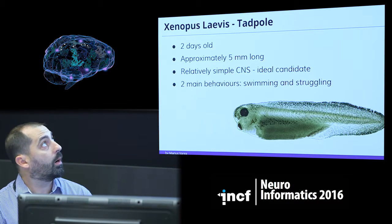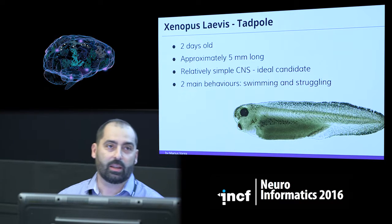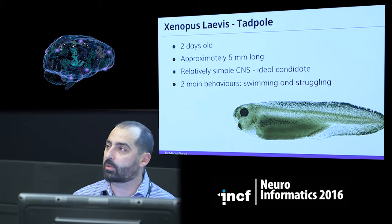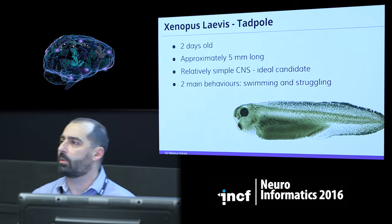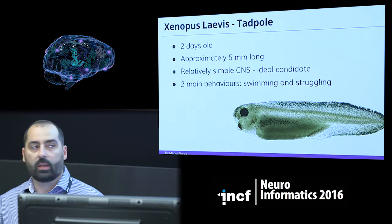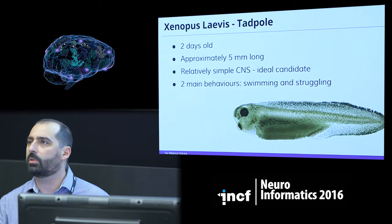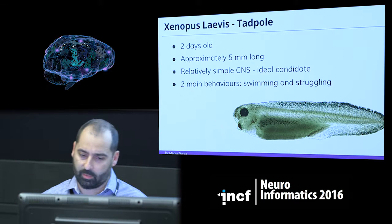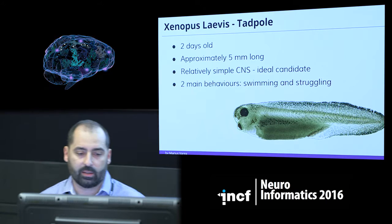Our main protagonist here is the tadpole. This particular specimen is two days old and about five millimeters long. The reason we chose it is that even though it has thousands of neurons in the network, this particular simulation uses only seven neuron types, making it relatively simple compared to other creatures and an ideal candidate.